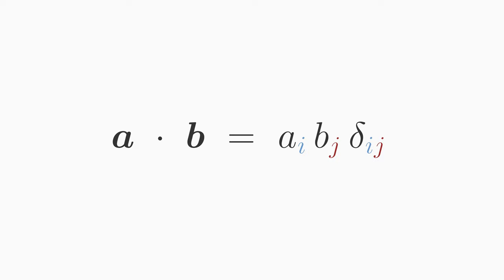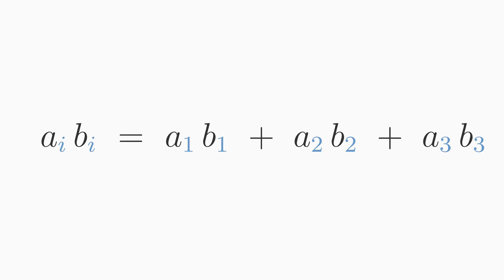So a scalar product b is equal to ai times bj times delta ij. If you remember the third rule, you can contract the summation index j if you want. So the scalar product becomes ai times bi. And you get exactly the definition of the scalar product where the vector components are summed component-wise.